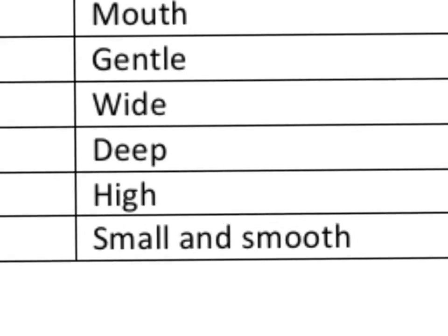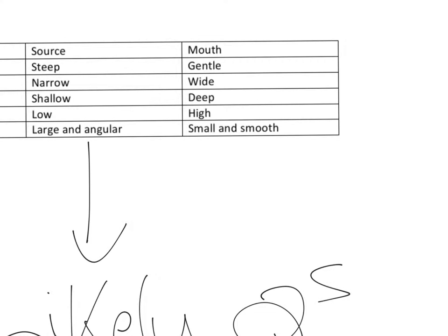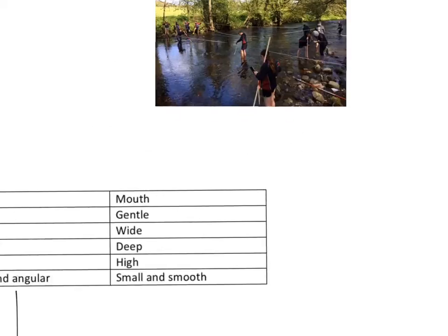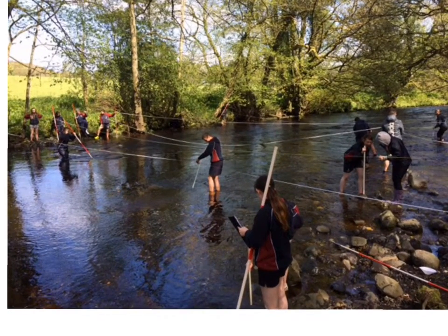Coming down to the mouth, the gradient of the land becomes gentle now, so that means that the land either side of the river flattens out. It becomes much wider, the depth increases to deep, the discharge is high and the load becomes small and smooth. And those characteristics relate directly to this picture.